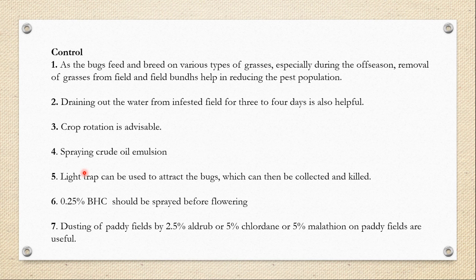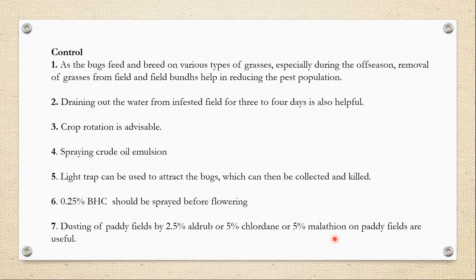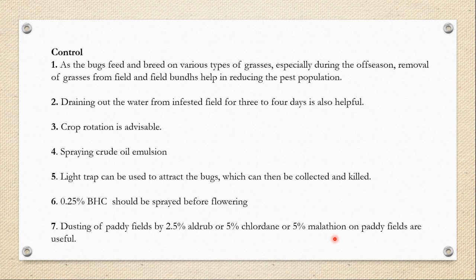Spraying crude oil emulsion is also found helpful. Light traps can be used to attract the bugs, which can then be collected and killed. For chemical control, 0.25% BHC can be sprayed before flowering; since BHC is an organochlorine pesticide it persists in nature, so spraying before flowering means it will persist on the rice plants and when Leptocoryza attacks, the insects will die from this chemical. Dusting paddy fields with 2.5% aldrin, 5% chlordane, or 5% malathion is also found useful — aldrin and chlordane are organochlorine pesticides, and malathion is an organophosphate pesticide.